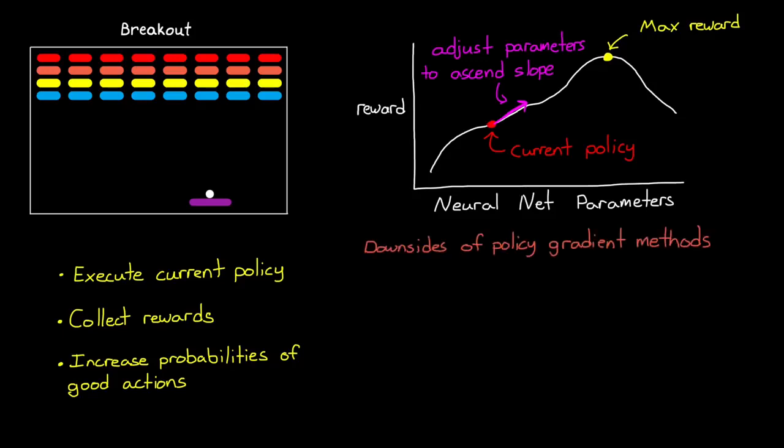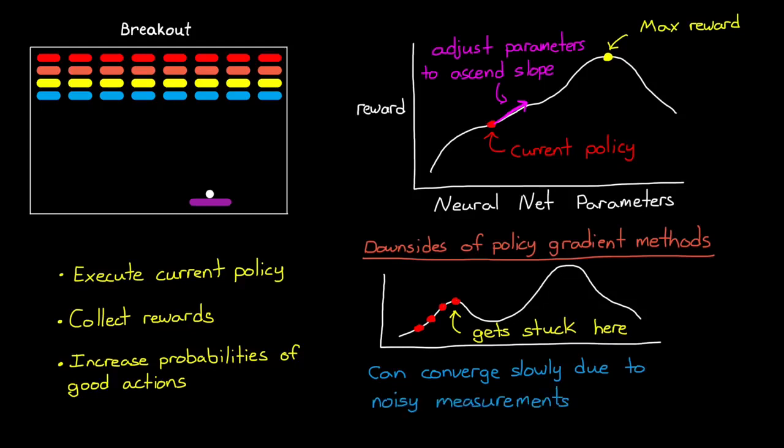Now the math behind this is more than I want to go into in this video, but I'd encourage you to read up on the policy gradient theorem to see how it's possible to find the gradient without actually taking a derivative. I've left a link in the description. Now one of the downsides of policy gradient methods is that the naive approach of just following the direction of steepest ascent can converge on a local maxima rather than global.